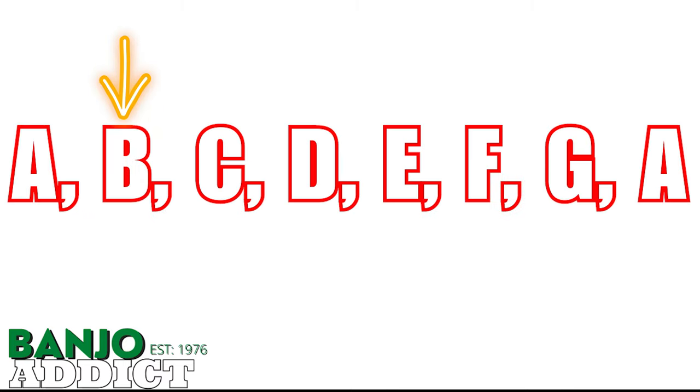So the A minor scale looks like this. A, B, C, D, E, F, G, and then back to A.